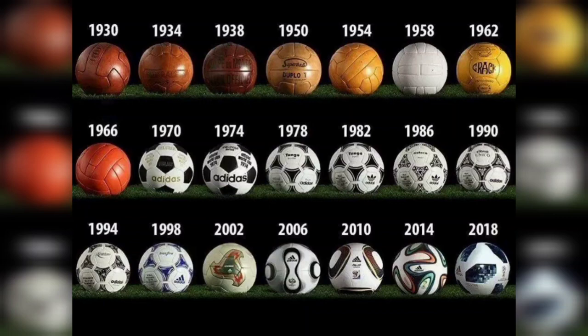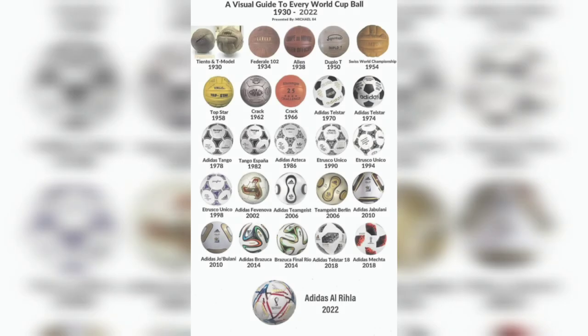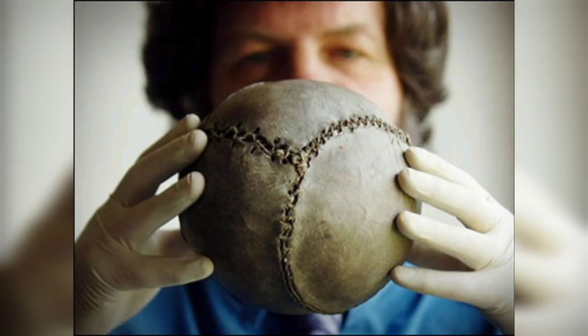Greetings to all. Today we will talk about how the soccer ball has evolved. Since football became popular in the middle of the 19th century, balls have been made from different materials and have had different shapes.